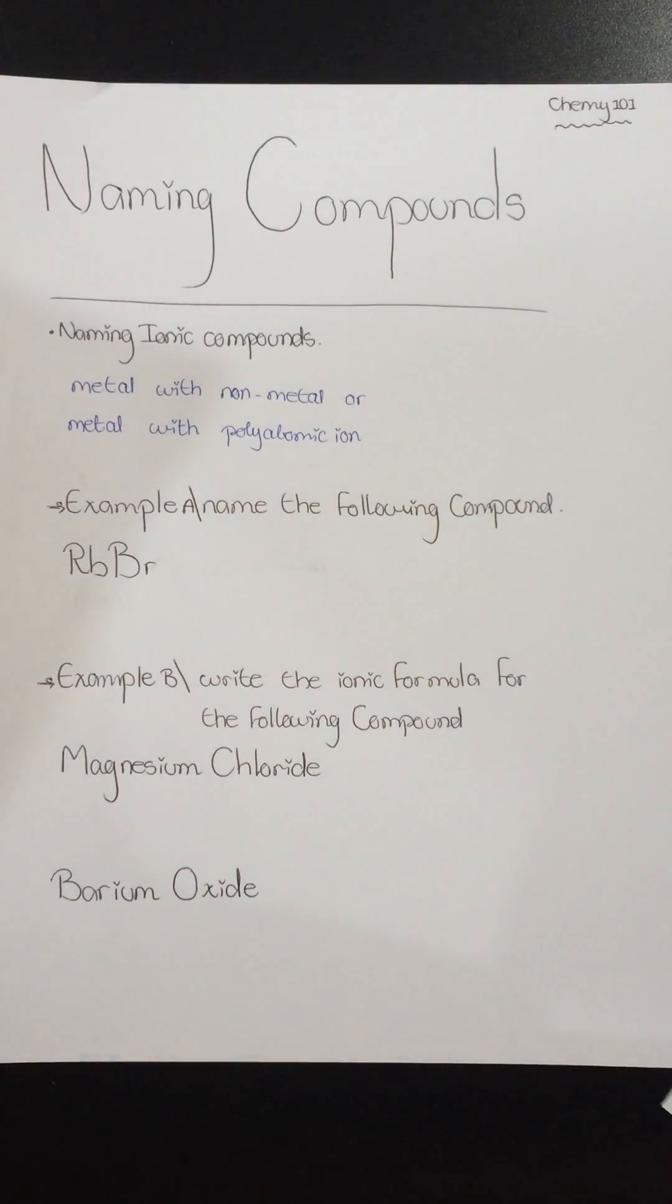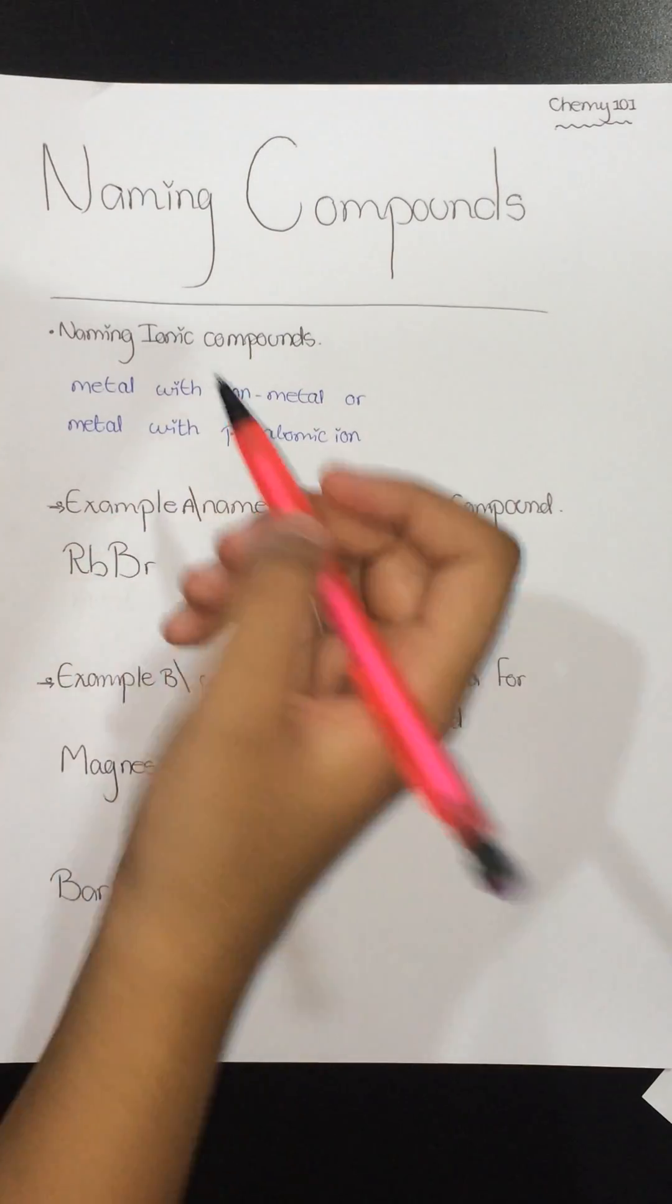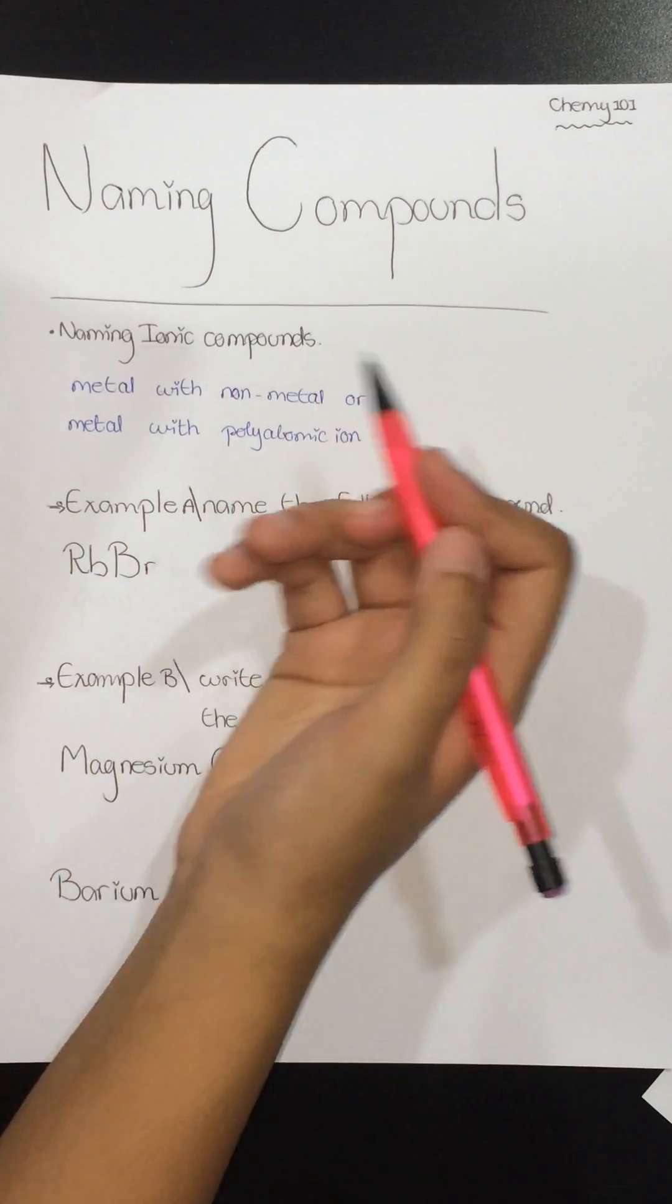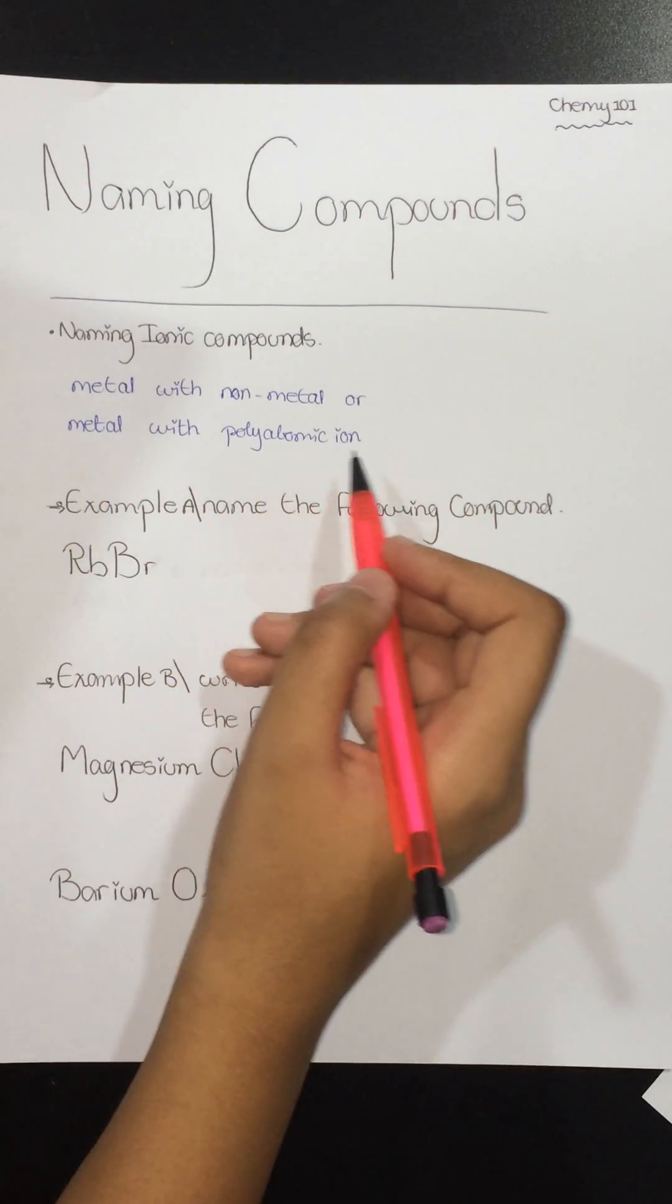And now we will go for naming compounds, naming the ionic compounds first. The ionic compound is a bond between metal with non-metal, or metal with polyatomic ion.